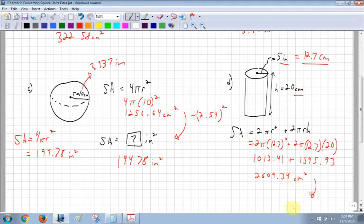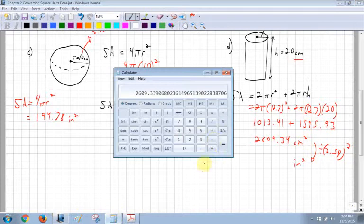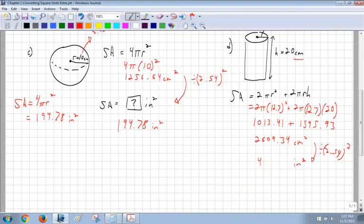Now, say it wanted the answer in inches squared. Then I could go and I could divide this, because I'm getting from centimeters to inches. So I'm getting into a bigger form of measurement. So there's going to be fewer of them. Divide by 2.54. And remember, we should be able to see from all the other examples that I have to square it because we're dealing with area. So I take my answer, I divide that by bracket, 2.54 squared, and that's going to be 404.45 inches squared.